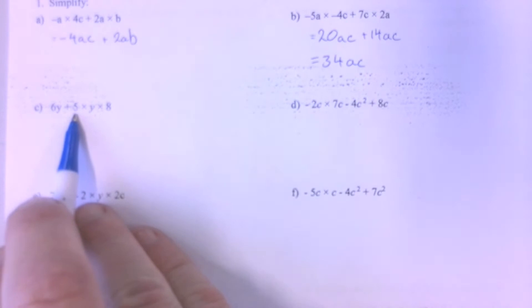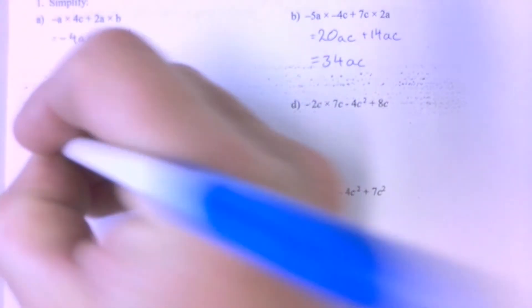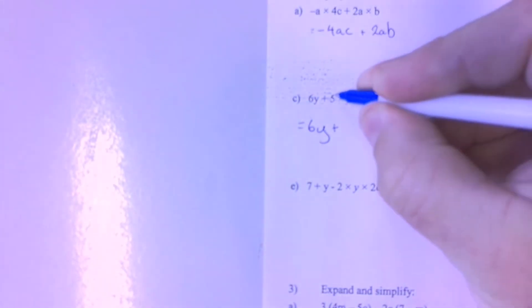Question 1C has got addition and multiplication in it. We're going to need to do our multiplication first, so I'm just going to start by writing 6Y. And then I'm going to multiply these together: 5 times 8 making 40, and Y. Now I can collect these as like terms, because I have 6 groups of Y and 40 groups of Y, giving me 46 groups of Y altogether.